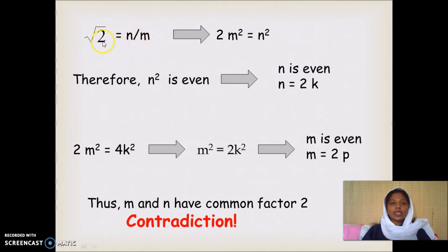We will square both sides. We will get 2 equal to n squared divided by m squared. Bring the m squared to the left hand side. We will get 2m squared equal to n squared.